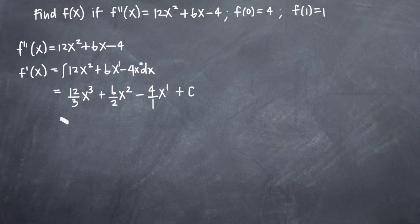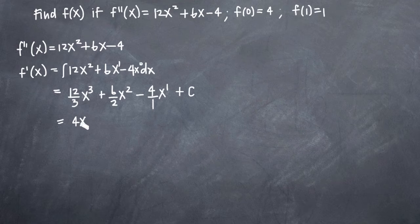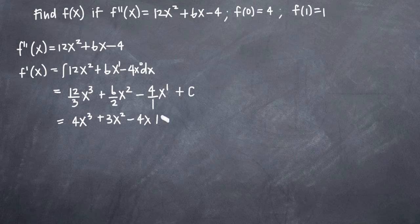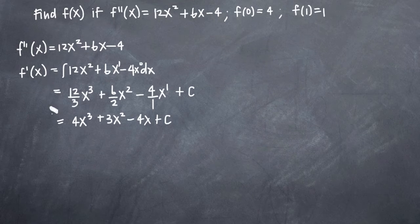So now that we have f prime of x, we just need to simplify. 12 divided by 3 is 4, so we get 4x cubed. 6 over 2 gives us 3x squared. And this here just becomes 4x. Then we keep our c for the constant of integration. So that's f prime of x.